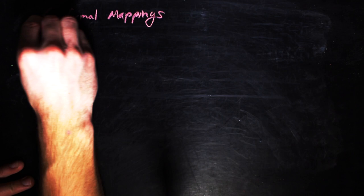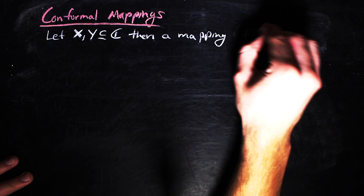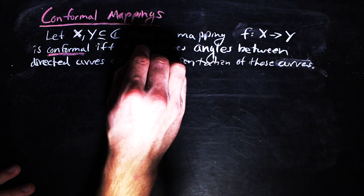a function that preserves the geometry locally is called a conformal mapping. More formally, let x and y be subsets of c. Then, a mapping from x to y is called conformal, if and only if it preserves angles between directed curves as well as the orientation of these curves. We're not too worried about orientation, but from a geometric standpoint, that should be okay.